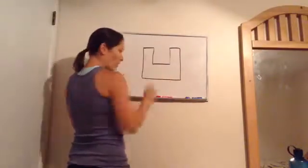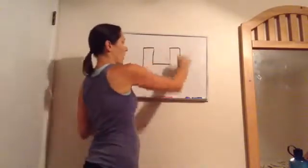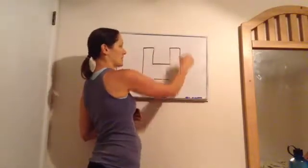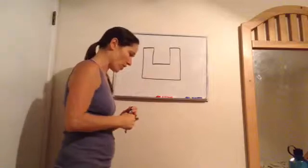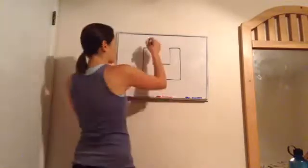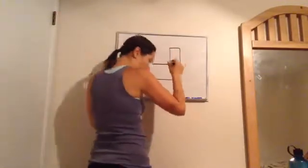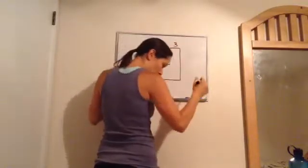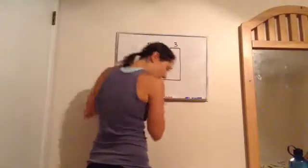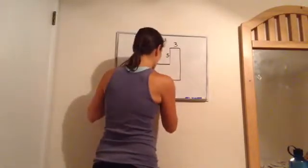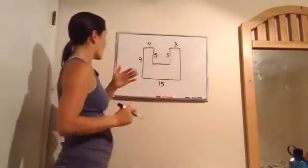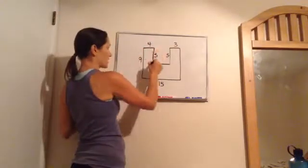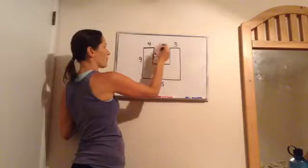We're going to take a different-shaped figure and figure out the distance around it. This is not talking about the area — what's on the inside — it's talking about the distance around. If you want to draw this on your paper, go ahead and do so and put these numbers on the sides.